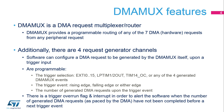Each request generator has programmable registers to select: the trigger input, the trigger active edge, and the number of generated DMA requests. An overrun interrupt request is asserted when a new trigger is detected while the number of generated DMA requests caused by the previous trigger has not been completed.